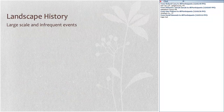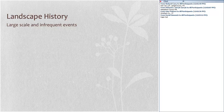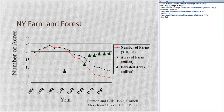Let's jump right into landscape history. Landscape history is essentially the process of large-scale and infrequent events — we're thinking about very large spatial scales and large temporal scales. In the Northeast, this graphic from New York would be roughly applicable to most of the eastern United States. We can see changes in the composition of the landscape over time.